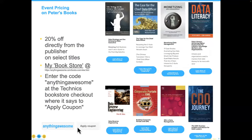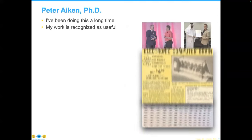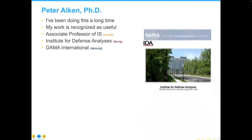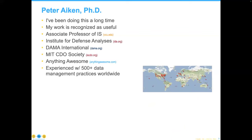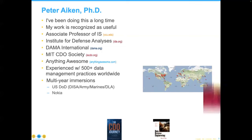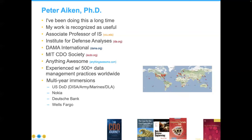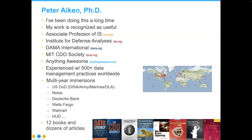Now let me introduce our speaker for today, Dr. Peter Aiken. Peter is an acknowledged data management authority and associate professor at Virginia Commonwealth University, president of DAMA International, and associate director of the MIT International Society of Chief Data Officers. For more than 35 years, Peter has worked with hundreds of data management practices in 30 countries. Among his 12 books are many firsts, and he has founded several organizations that helped more than 200 organizations leverage data-specific savings measured at more than $1.5 billion US dollars.